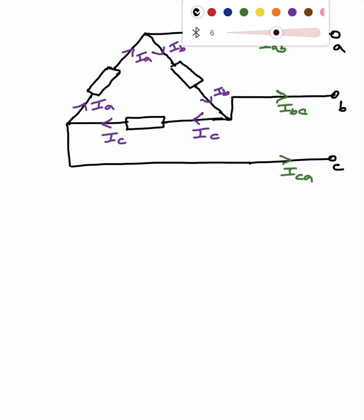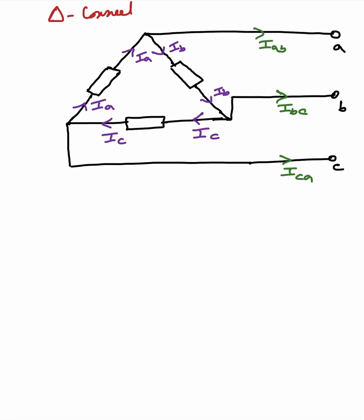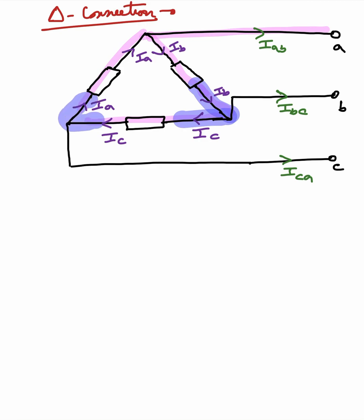Next is the delta connection. In the delta connection there are three phases: Ia, Ib, and Ic. There are line currents and winding currents such as Iab, Ibc, and Ica. The phase current Ia is a combination of the positive, negative, and zero sequence components.